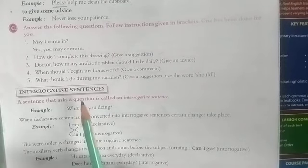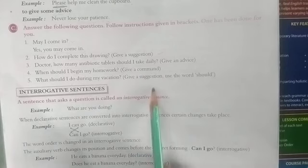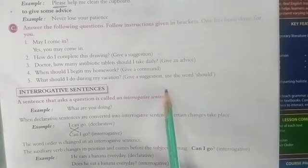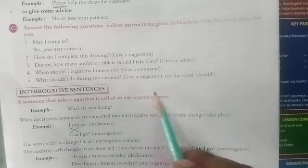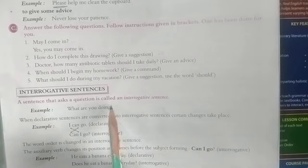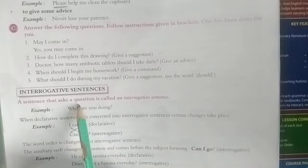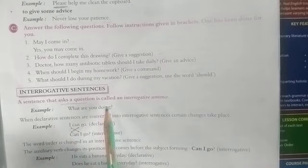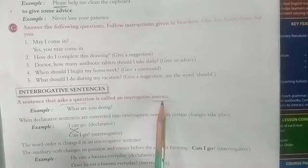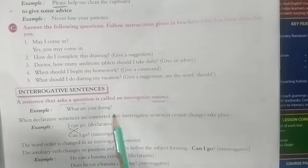Now let's move towards interrogative sentences. In the interrogative sentence, generally we know interrogative means questions. Sometimes we are asking WH questions, sometimes we are asking yes/no questions. For example, 'What are you doing?' — here a question mark is given. By the question mark you can say it is a question sentence. A sentence that asks a question is called an interrogative sentence.